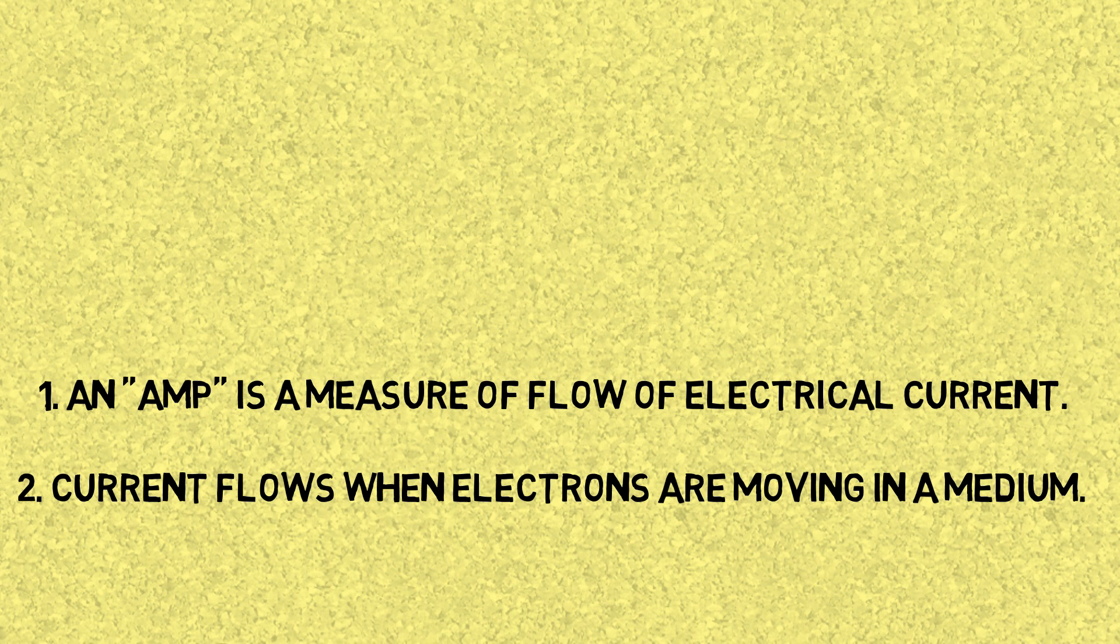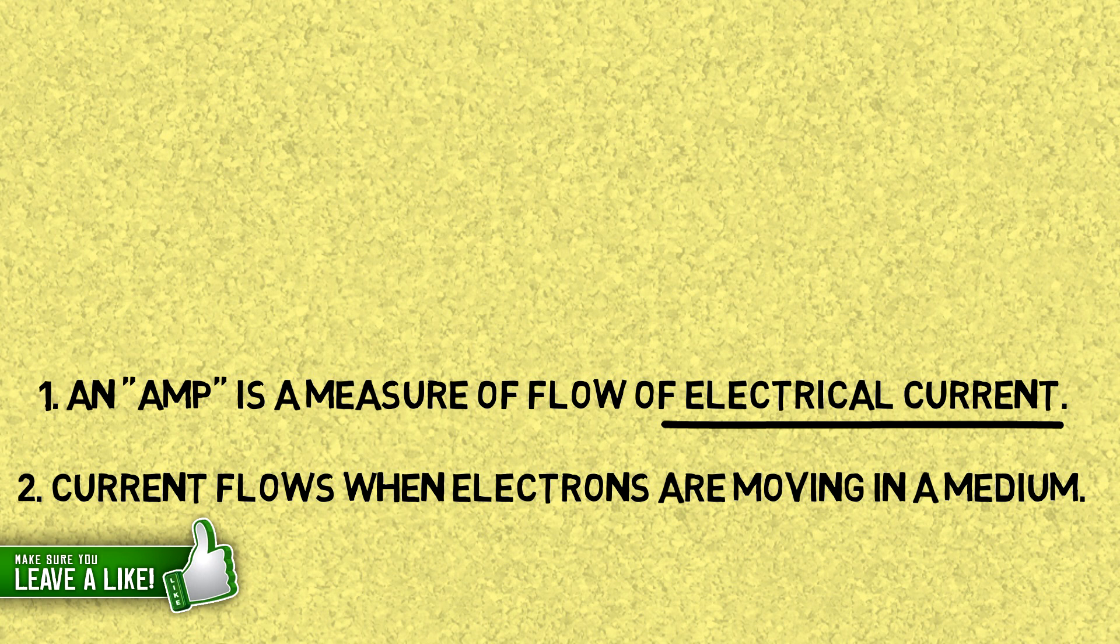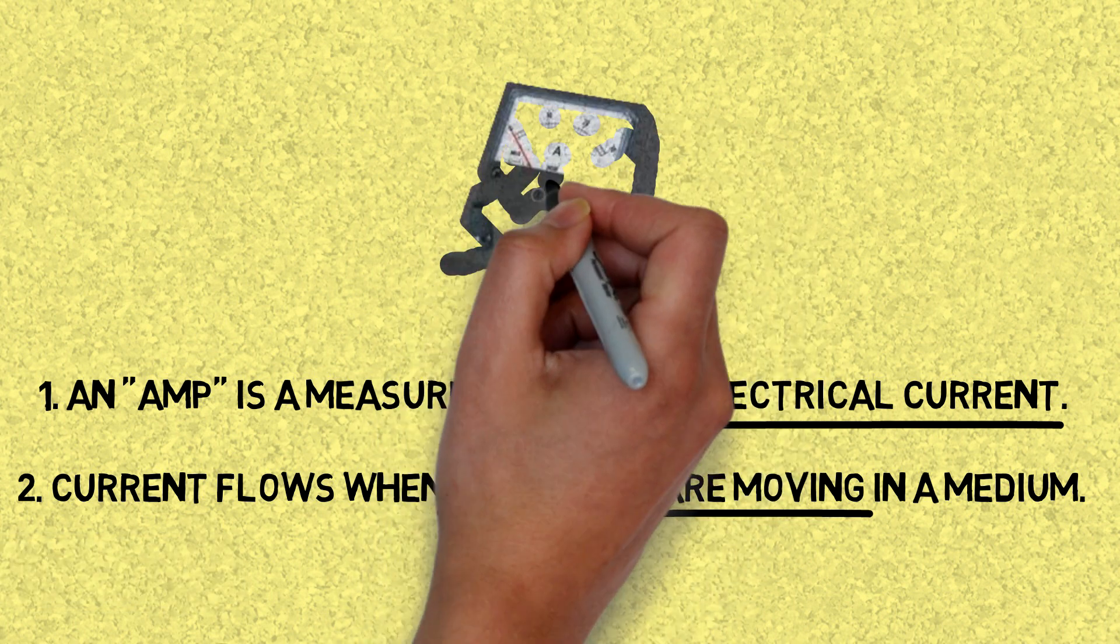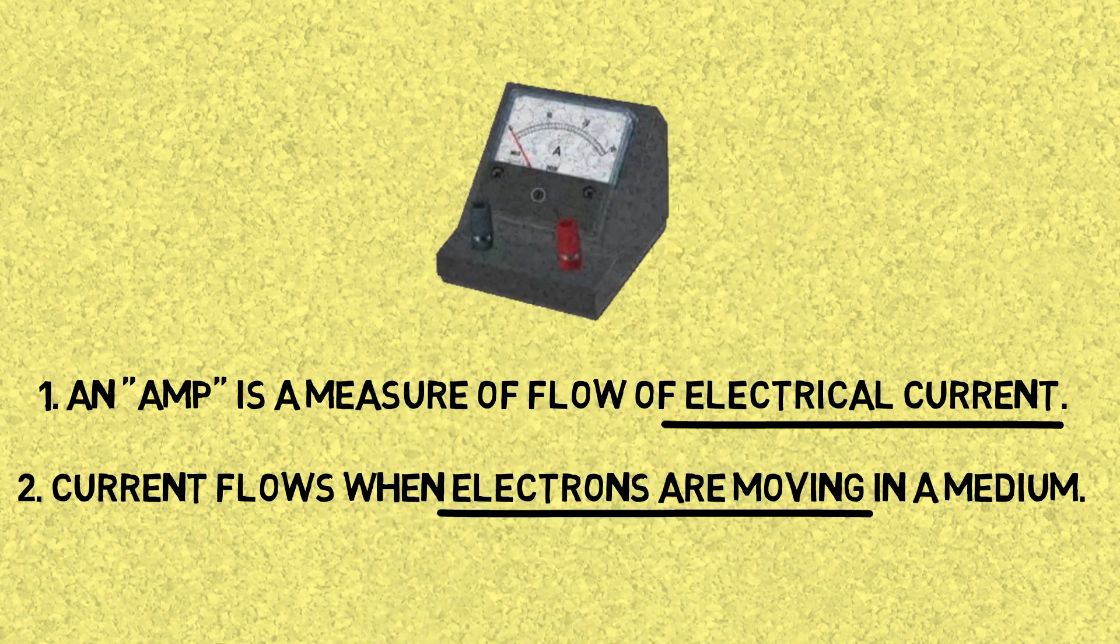Now going back to the first point, an amp is a measure of flow of electricity, meaning how much electrical current is going through, which depends on the number of the electrons moving. But how much of electrical current is one amp?